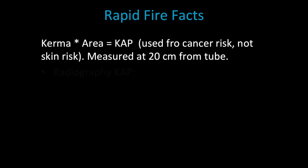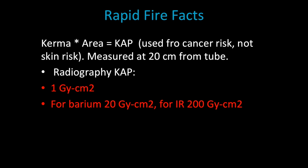The kerma area product for a radiograph is one gray per centimeter square. For barium and other modalities you can see goes up, it goes up to 20, and for IR it even goes up to 200. That's a kerma area product that's a type of approximation for stochastic or cancer risk in the patient. And that's all, I hope you like this format.